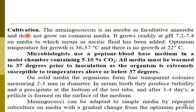According to the cultural characteristics of Neisseria, the meningococcus is aerobic or facultative anaerobic. It can grow in the presence of oxygen and does not grow on common media. It grows readily at pH 7.2 to 7.4 on media to which serum or ascitic fluid has been added. The optimum temperature for growth is 36 to 37 degrees centigrade, and there is no growth at 22 degrees. Microbiologists use a peptone blood-based medium in a moist chamber containing 5 to 10 percent carbon dioxide, because this bacterium is classified as a capnophilic microorganism — requiring 5 to 10 percent CO₂ to grow.